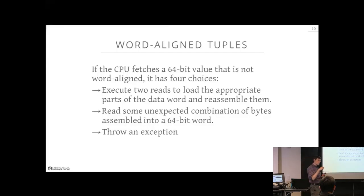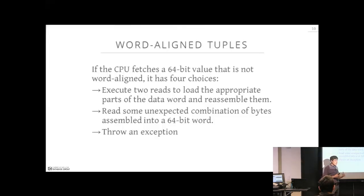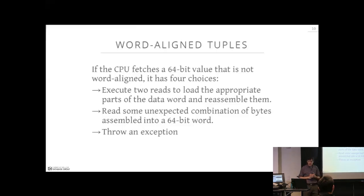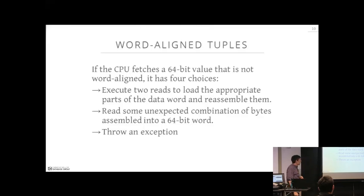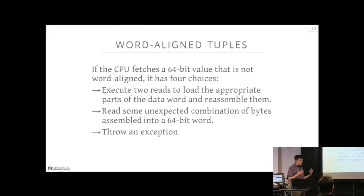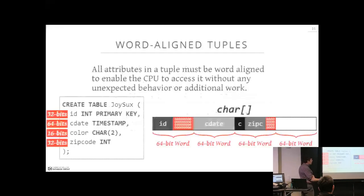This is terrible — you'd store data in your database, go back to read it, and get garbage. The third case is that the CPU throws an exception and denies your read entirely — which is reportedly what ARM processors do. We're doing more work than necessary; effectively doubling the reads in this example, running at a billion times per second, this slowdown adds up.